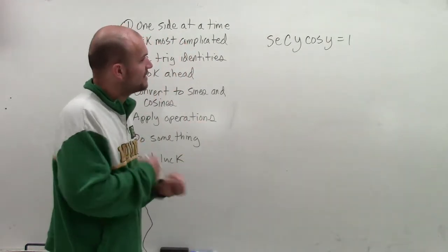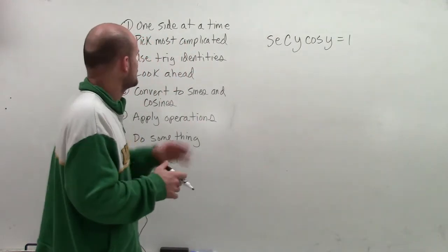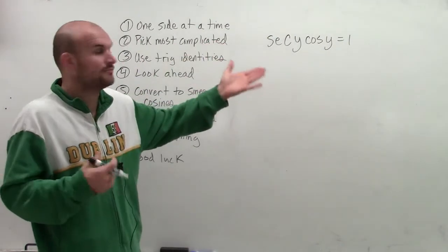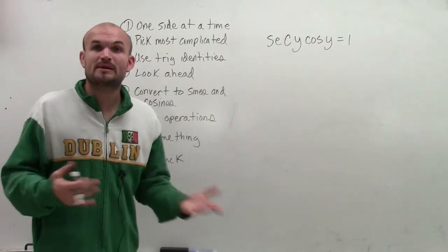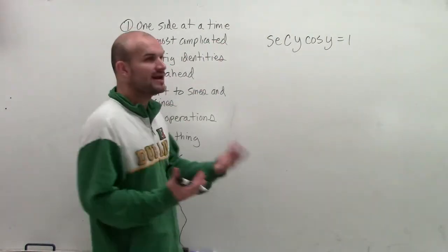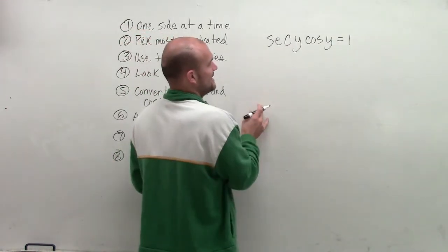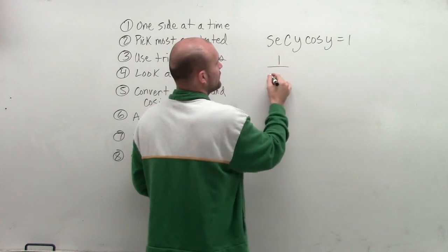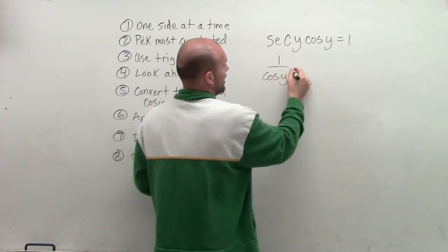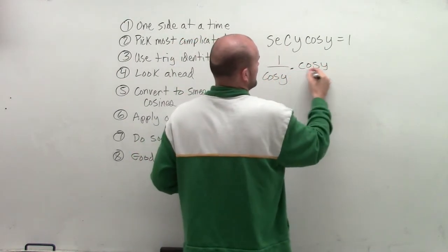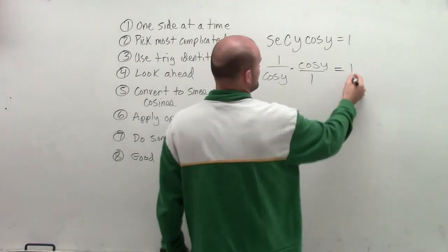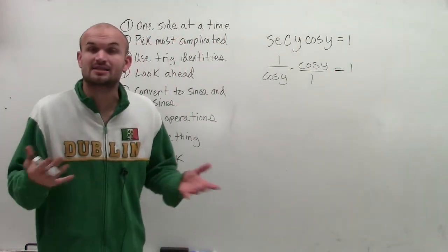Now, to simplify the side, what I want to do is I'm just going to look at this. The trig identities I might want to use would be my reciprocal identity. So I say, how can I rewrite this, any kind of reciprocal identities? Well, I can rewrite the secant of y as 1 over cosine of y times cosine of y. And I'm going to put this as over 1, so you can just understand that the cosine of y is going to be my numerator.